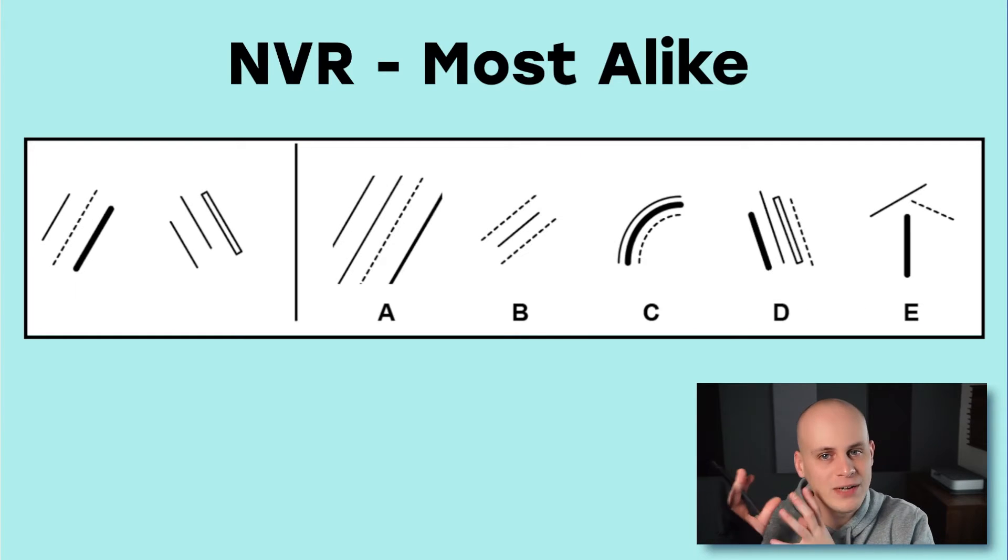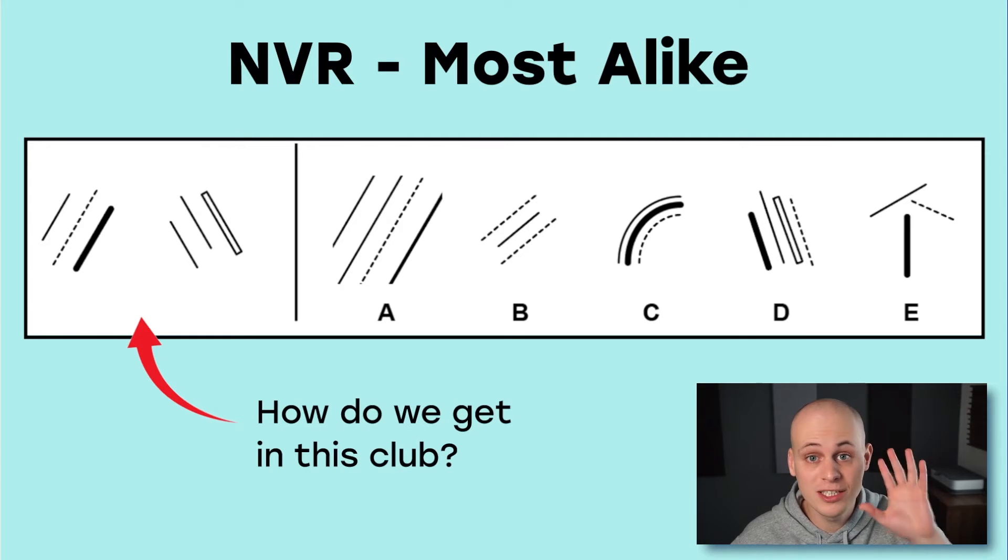Most alike questions are where you're given two figures on the left and you've got to pick one of the figures from the right that is most alike them. In other words, the two figures on the left are in a club and you've got to figure out the rules to be in that club and pick the best candidate from the right. So, to solve these types of questions, we're asking ourselves one question.